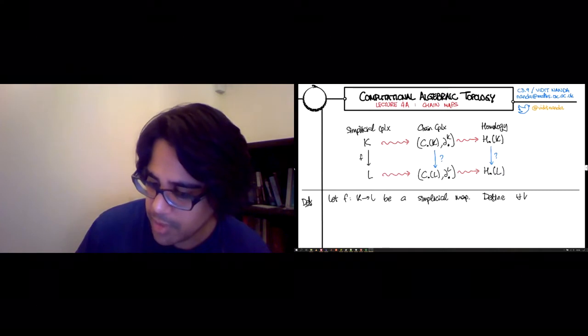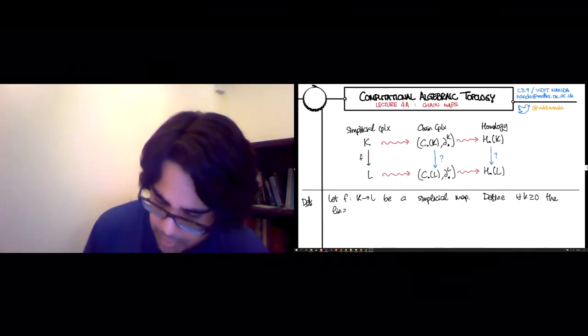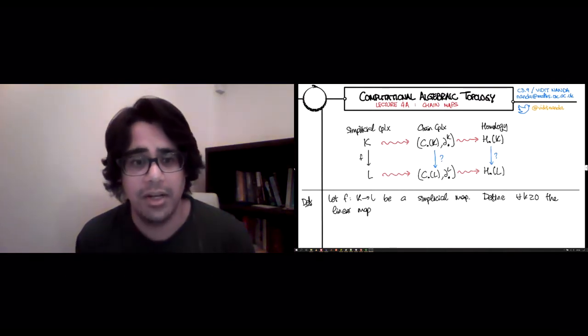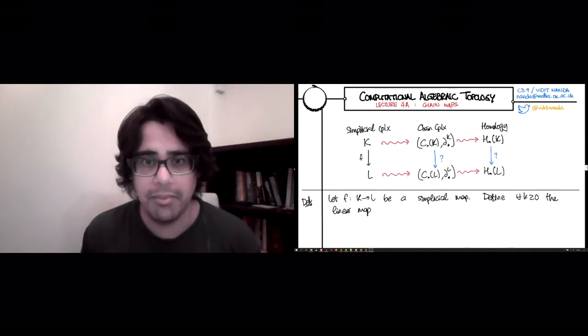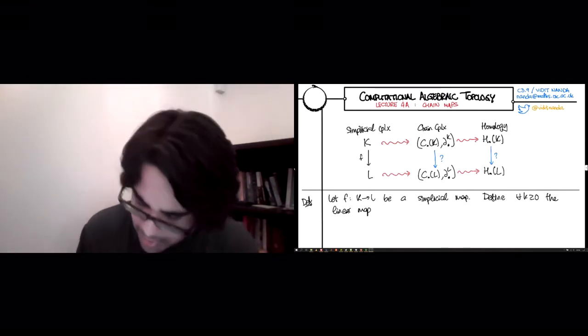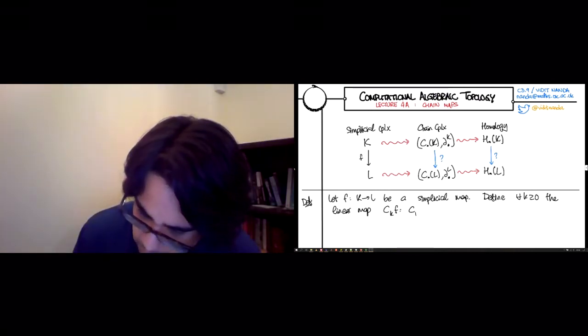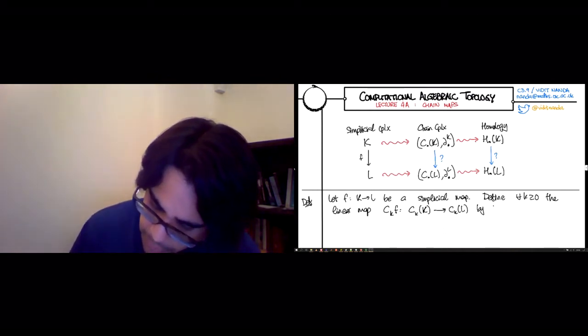define for each dimension k greater than or equal to zero the linear map. We're trying to relate the chain complex of K to the chain complex of L. Therefore, we want a linear map, ideally taking the k chains to the k chains. So I'll call it c_k(f), which goes from the k chains of K to the k chains of L by the following action.